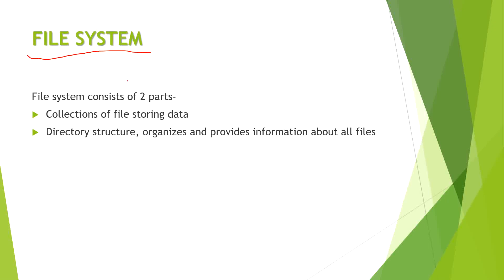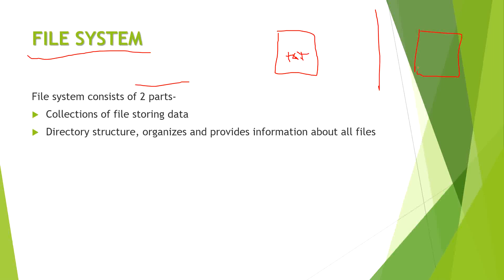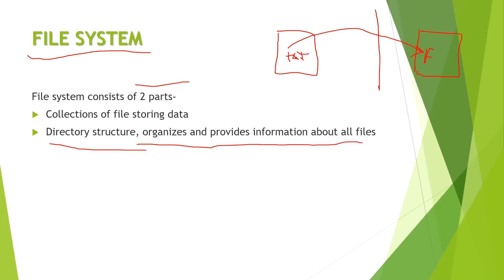The file system consists of two parts. The first type is files that contain information, like text files which contain data. The second type is folders, which are directories containing different files or information about files. This second classification is known as the directory structure, which organizes and provides information about all the files.